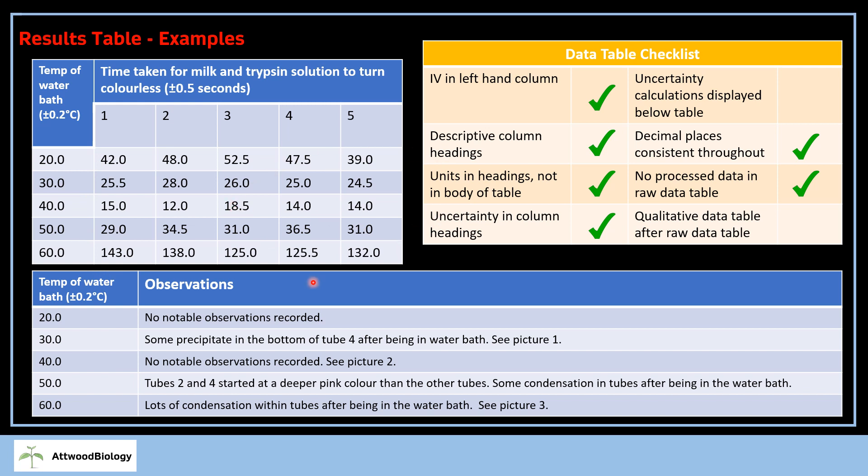Even 28 becomes 28.0 to one decimal place. That needs to be consistent—it's an easy win with your results table, but the kind of thing I send students away to change repeatedly. We've also got some qualitative data here. You need quantitative and qualitative data. This qualitative data is quite brief, but as long as you've got some qualitative observations, that's good. Qualitative data is what you can see—color changes, condensation, precipitate, things you observe that aren't quantitatively measurable. The only thing missing is uncertainty calculations aren't displayed below the table, which the next slide covers.